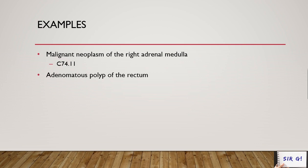Second example: adenomatous polyp of the rectum. There is no indication of cancer here — adenomatous polyp is benign. Go to the anatomy 'rectum,' select the benign column. The correct code is D12.8.